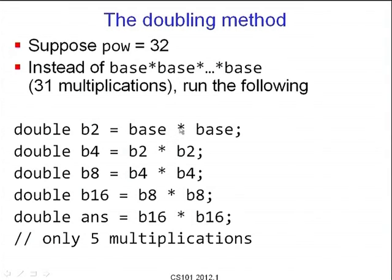For the general case where the power is not a power of 2, suppose pow = 29. We can express 29 as a sum of powers of 2: 16 + 8 + 4 + 1 = 29. Therefore the answer is base * b4 * b8 * b16. If I computed all these powers of 2, I can put them together with a few more multiplications to get base^29. How can I implement this for the general case?